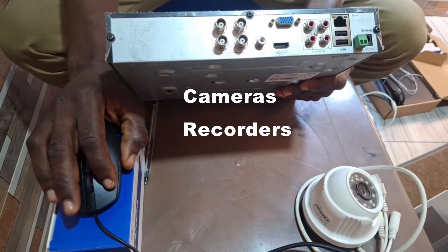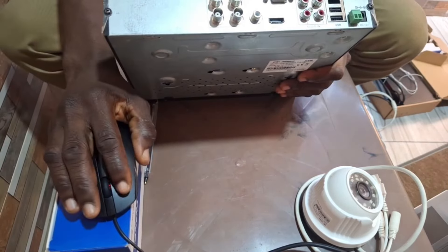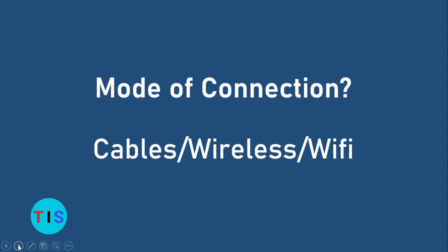The CCTV system comprises cameras, recorders, and display units. There are three modes of connection for CCTV camera installation. The first is cable connection, where CCTV cameras are connected using physical cables. The most common you'll find is the cable connection system, where you need to lay physical cables between your CCTV cameras, recorders, and display units.